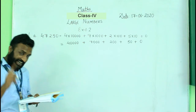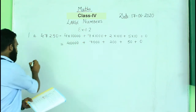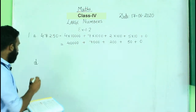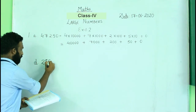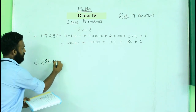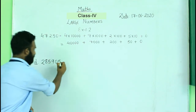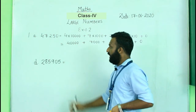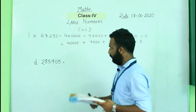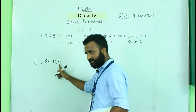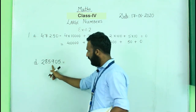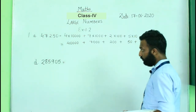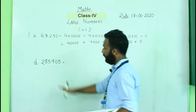Now I'm doing one more question — that is question 1d. The number we have is 2,85,905. Same as before, I will first check the place value of each digit. Starting from the ones place: ones, tens, hundreds, thousands, ten thousands, and lakhs.